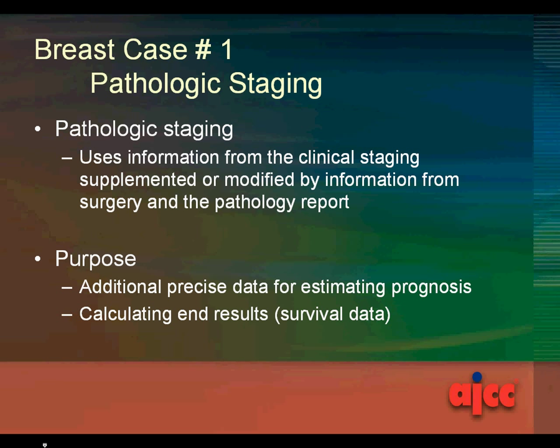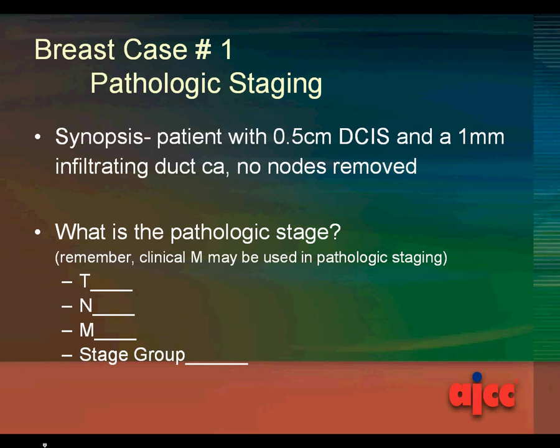A synopsis of the case: Patient with a 0.5 cm DCIS and a 1 mm infiltrating duct carcinoma, no nodes removed. What is the pathologic stage — the T, the N, the M, and the stage group?